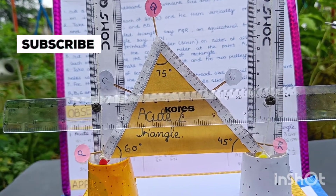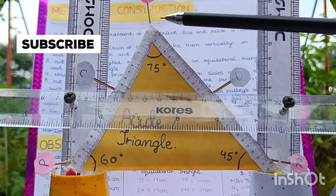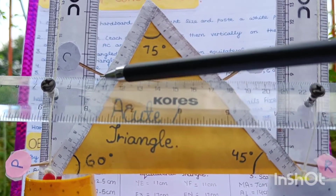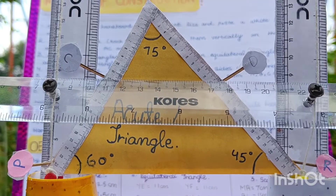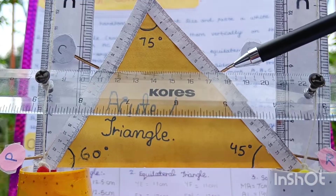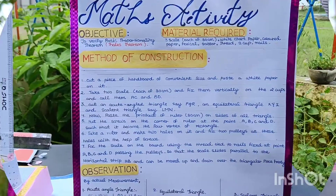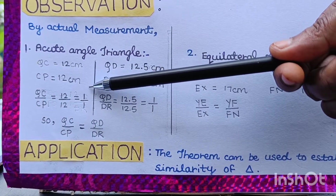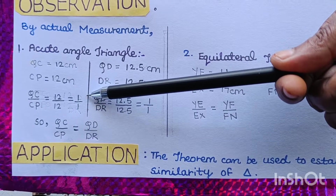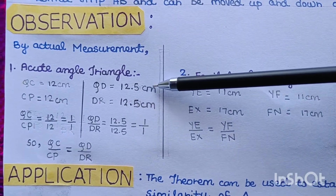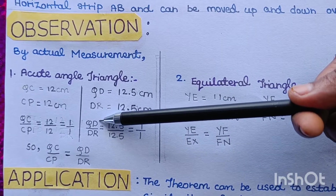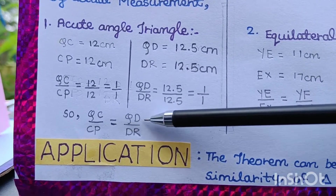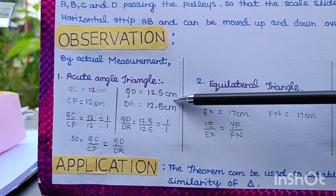Now we have to verify whether QC upon CP is equal to QD upon DR. On measuring, QC is equal to 12 cm and CP is equal to 12 cm, so QC upon CP equals 1 upon 1. QD is equal to 12.5 cm and DR is equal to 12.5 cm, so QD upon DR also equals 1 upon 1. Therefore QC upon CP is equal to QD upon DR, showing that the other two sides are divided in the same ratio.